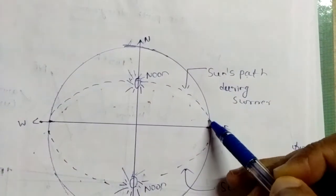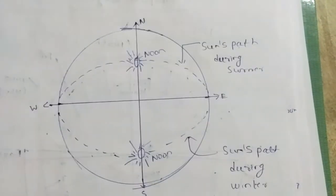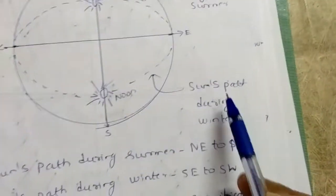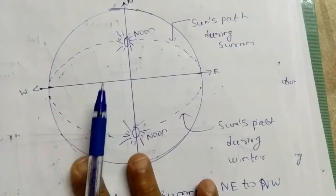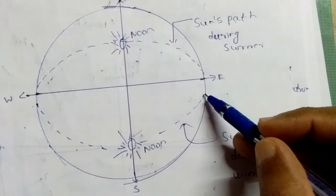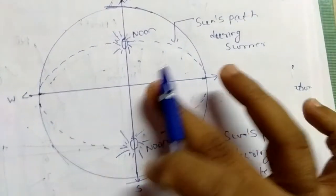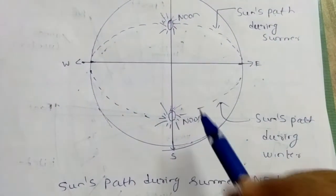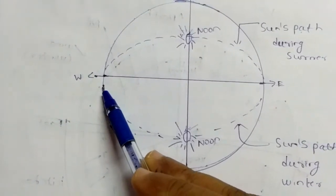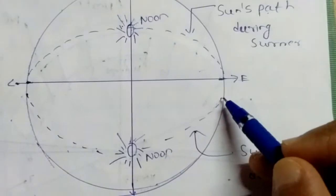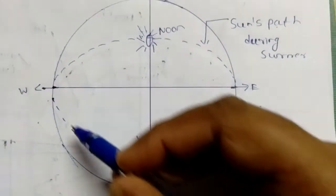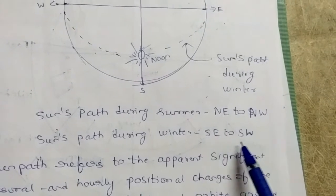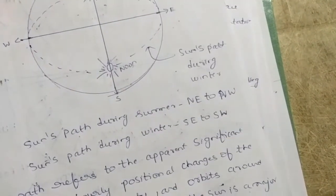Now considering the sun's path during winter, we can see a different dotted line on the diagram. This line rises in the southeast region — the dotted line is clearly in the southeast region — and ends in the southwest region. So the sun's direction of travel from rise to set during winter is southeast to southwest. The sun's path during the winter season is from southeast to southwest.